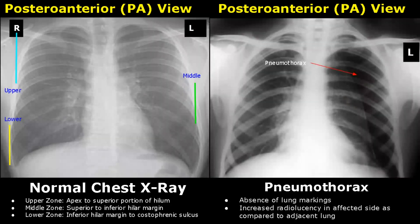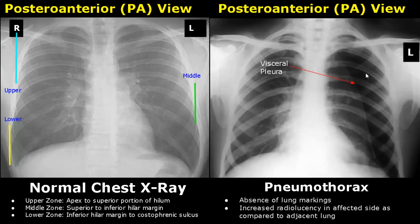Pneumothorax is defined as the presence of air in the pleural cavity. There will be absence of lung markings at the site of pneumothorax — we do not see any lung vessels here. Also, there is increased radiolucency on the affected side as compared to the adjacent lung; it is darker than usual. You can see a vertical line which represents the visceral pleura, seen in many cases of pneumothorax.